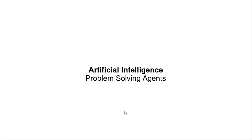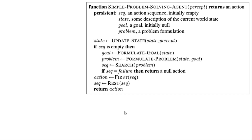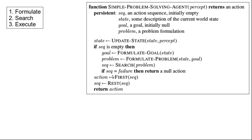Welcome to today's class on problem-solving agents. Here is the pseudocode for the problem-solving agent. The agent takes as input the current percept and returns an action. It maintains a sequence of actions, initially empty; a state describing the current world state; a goal, initially null; and a problem formulation. The body of the pseudocode has three steps: formulate the problem, search for a solution, and execute the solution.